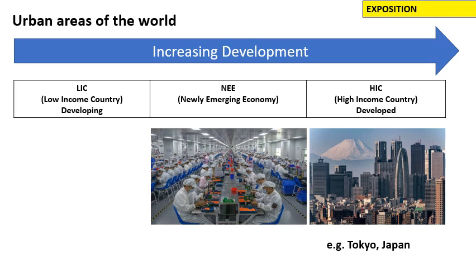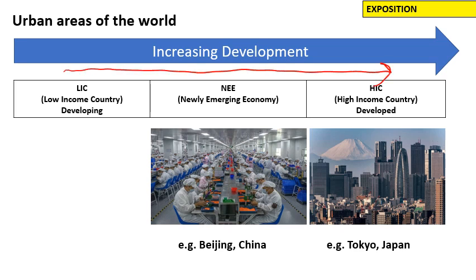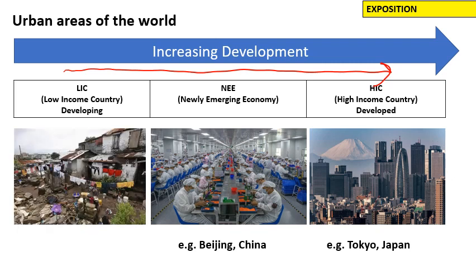Countries that are not as developed we call newly emerging economies. These are countries which are moving towards development, but they also have large urban areas and megacities within them. Beijing is a megacity in China, and China has lots of megacities which house many millions of workers, particularly in the secondary industry. The poorest countries in the world, which we call low income countries, also have urban areas but with fewer people. Liberia in Africa has Monrovia as its capital — the poorest urban area in the world, and nowhere near becoming a megacity.